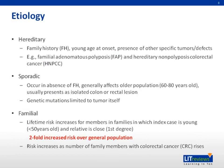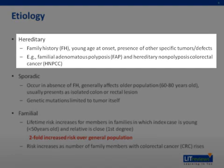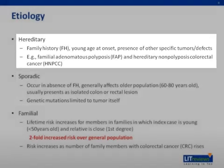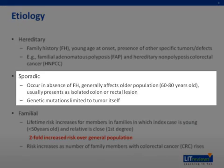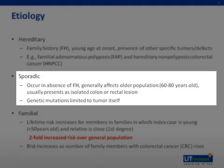Colon cancer occurs in hereditary, sporadic, or familial forms. Hereditary forms of colon cancer are characterized by family history, young age at onset, and the presence of other specific tumors and defects. Examples include familial adenomatous polyposis and hereditary non-polyposis colorectal cancer. Sporadic colon cancer occurs in the absence of family history, generally affects an older population, and usually presents as an isolated colon or rectal lesion. Genetic mutations associated with the cancer are limited to the tumor itself, unlike hereditary disease, in which the specific mutation is present in all cells of the affected individual.